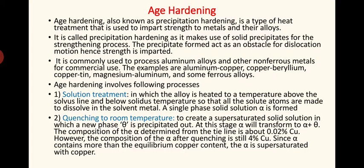Precipitation hardening is commonly used to process aluminum alloys and other non-ferrous metals. It is commonly used for aluminum-copper alloys, copper-beryllium, copper-tin, magnesium-aluminum combinations, and some ferrous alloys as well.